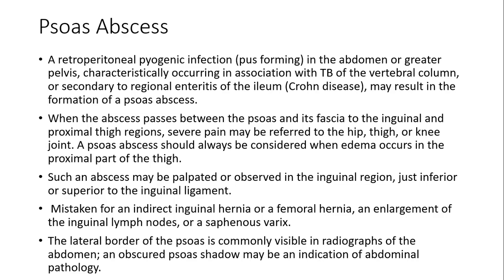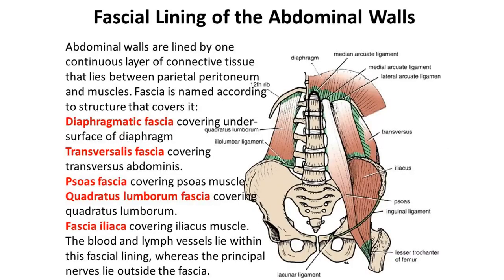Before we read about the psoas abscess, in my opinion we should have a look at the fascial lining of the abdominal wall. Here you can see the origin of the psoas muscle and here is the iliacus muscle. When both combine they form the iliopsoas, which is inserted over the lesser trochanter. The psoas has its origin from the transverse processes of the lumbar vertebrae, and the 12th vertebra is the origin of the psoas major muscle.